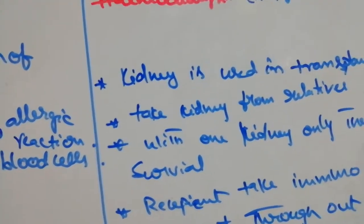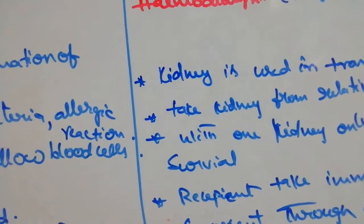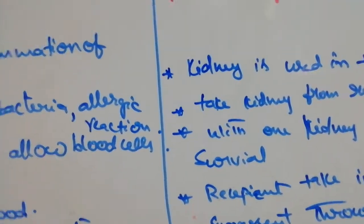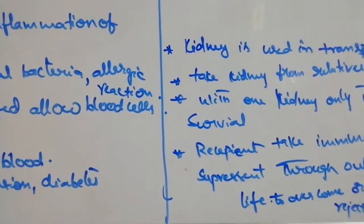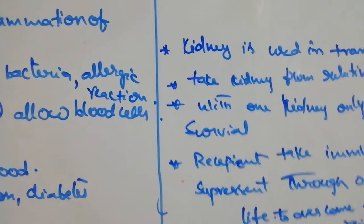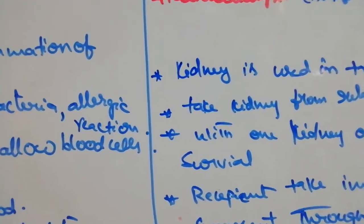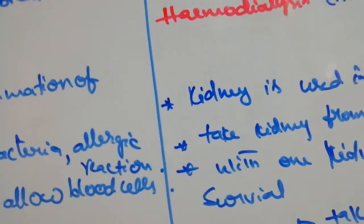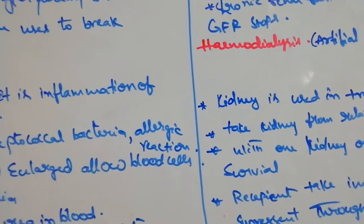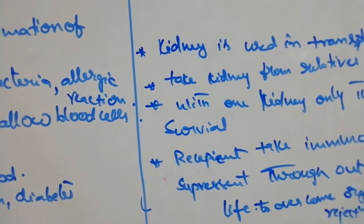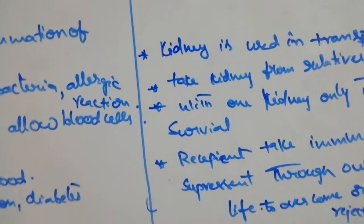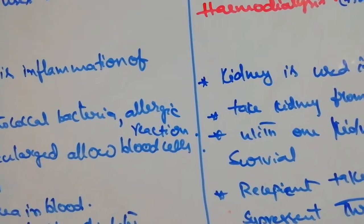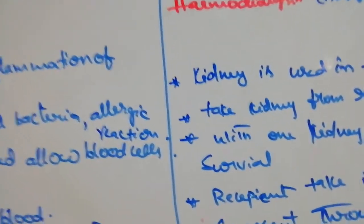The next process is kidney transplantation. In kidney transplantation, a kidney is taken from a relative donor. With one kidney only, the donor can survive. The recipient must take immunosuppressants throughout their lifetime to overcome organ rejection. By using immunosuppressants, the patient can survive because if any organ rejection occurs, the immunosuppressants help overcome it. Hemodialysis and kidney transplantation are the two final steps to overcome kidney disorders.